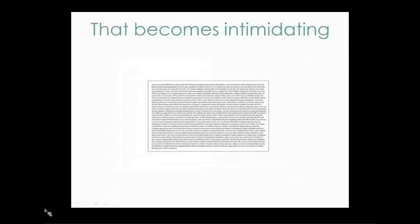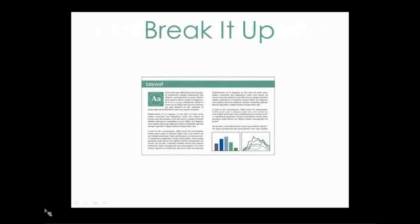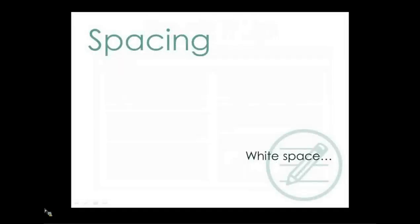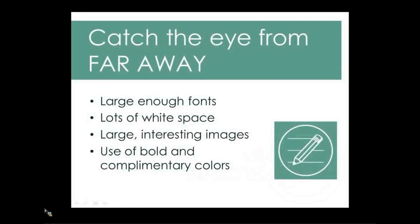Break up large text blocks. Create easy-to-digest sections by splitting text boxes up with columns, adding white space, and breaking up your text with visuals. A common mistake is trying to cram too much onto your poster — don't butt things right up against one another; let it breathe. CTAC suggests using only 50% of the actual poster area for content to maintain balance. Catch viewers' eyes from far away and reel them in with large legible fonts, white space that gives your poster breathing room, and interesting images.